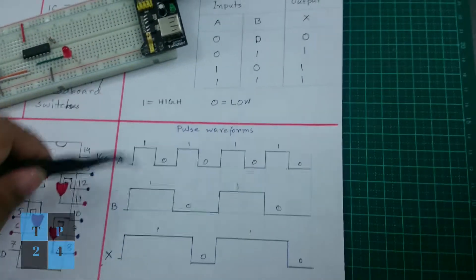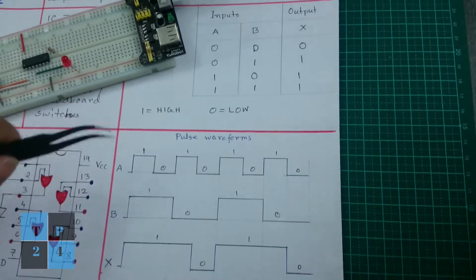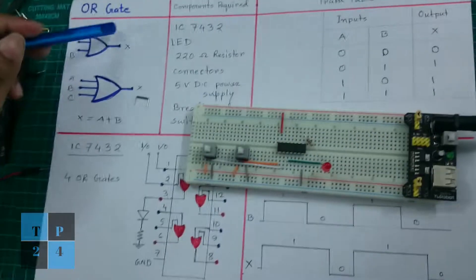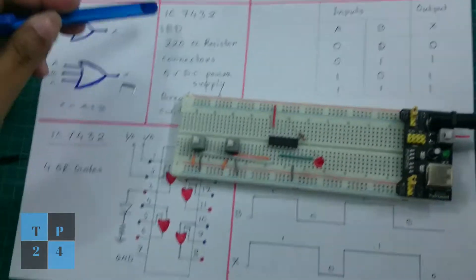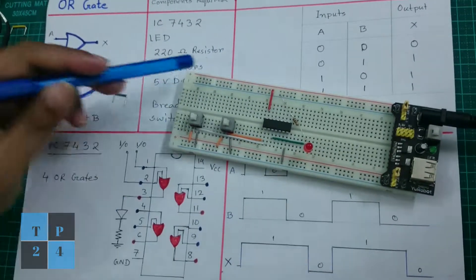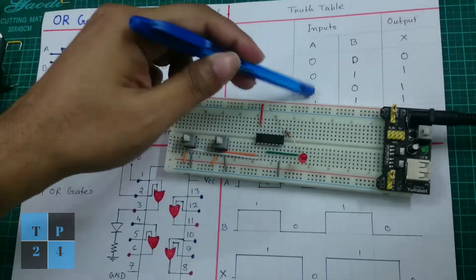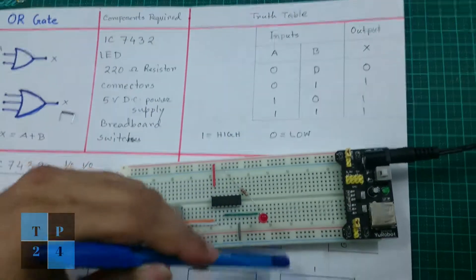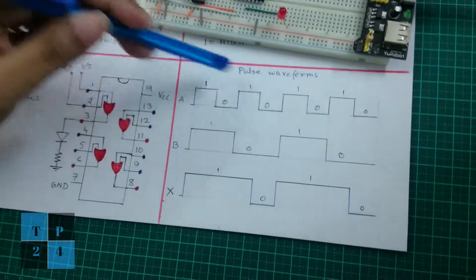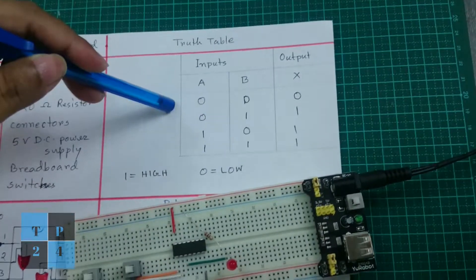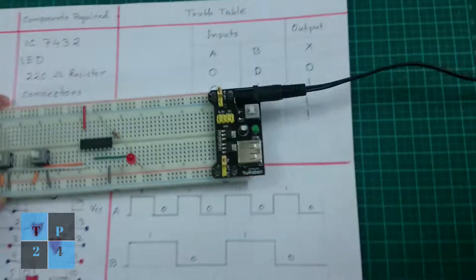So in this video I tried to explain the OR gate basics and the IC 7432 that contains four OR gates and its pin diagram. Along with that, I constructed a small circuit to explain the truth table here, and also I explained the pulse waveform to explain the OR gate input-output operation which follows the truth table.